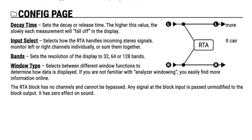Input Select selects how the RTA handles incoming stereo signals — monitor left or right channels individually, or sum them together. Bands sets the resolution of the display to 32, 64, or 128 bands. Then the Window Type selects between different window functions to determine how data is displayed. If you are not familiar with analyzer windowing, you can easily find more information online.